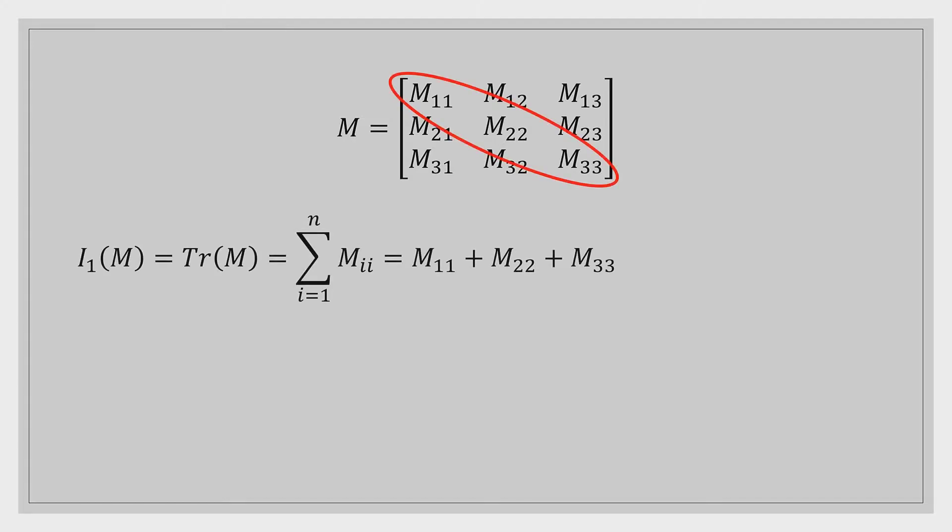So the first invariant is also called the trace. So the first invariant of matrix M is also equal to the trace of M. And this one's probably the easiest, because all you have to do is sum up that diagonal row. So M11 plus M22 plus M33. It's that easy. Nothing like that. It's just a nice quick summation.